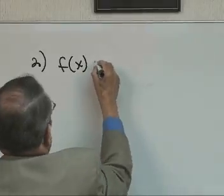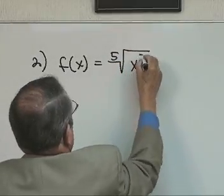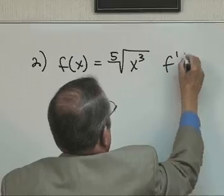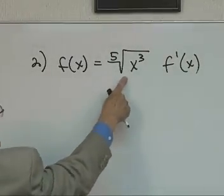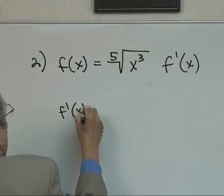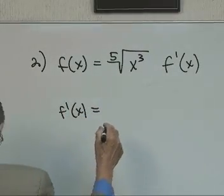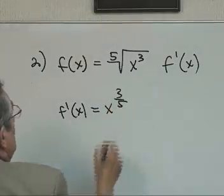f of x is equal to the fifth root of x cubed. Find f prime of x. The first thing you want to do is convert that radical to a fraction. So f of x is equal to x to the 3/5.